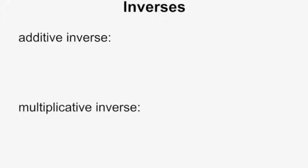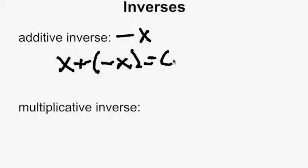The final pair of field axioms are the inverses. The additive inverse is negative x. If you add that to the same number, so x plus negative x, you get 0, which is the identity element for addition.